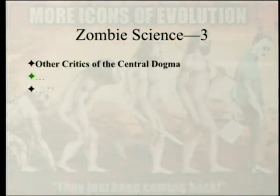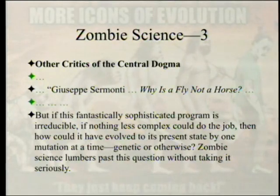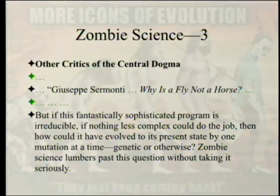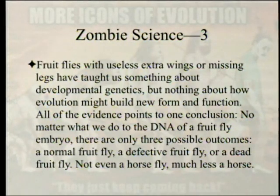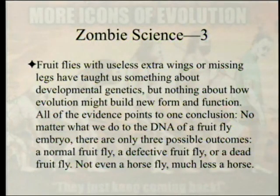Giuseppe Sermonti asks why a fly is not a horse. If the developmental program is irreducibly sophisticated, how could it have evolved one mutation at a time? No matter what we do to the DNA of a fruit fly embryo, there are only three possible outcomes: a normal fruit fly, a defective fruit fly, or a dead fruit fly. Not even a horse fly — much less a horse.